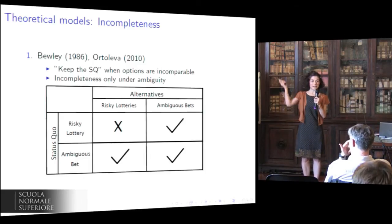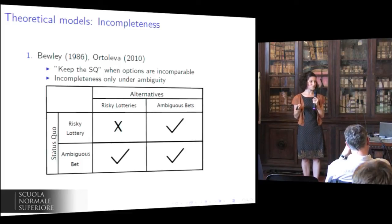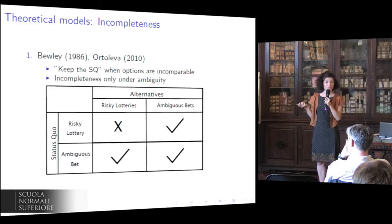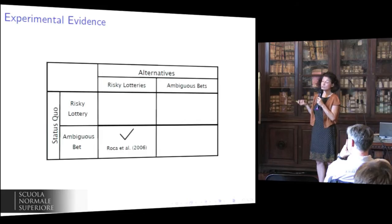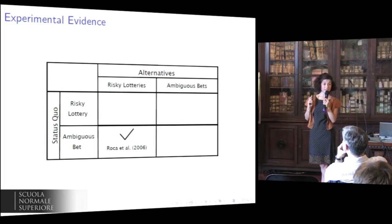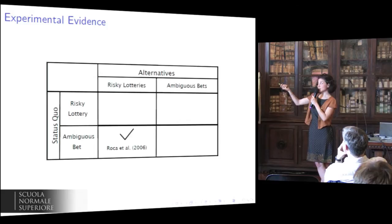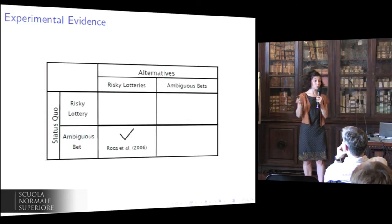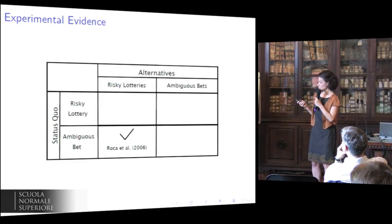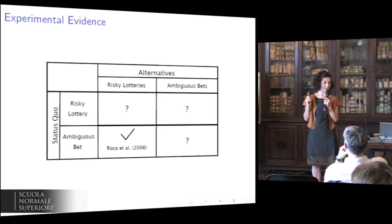So if the incomplete preferences story is correct, this is what we should expect: status quo bias everywhere except under pure risk. By measuring the bias everywhere in this matrix, we will really be able to say whether the theory of loss aversion or the theory of incompleteness is behind the bias. What we know experimentally is surprisingly very little — we are only aware of one paper that looked at the case of an ambiguous status quo and a risky alternative, and it did find status quo bias there. But this finding in isolation cannot disentangle the story of loss aversion from the story of incompleteness. What we are going to do is fill the matrix everywhere else.